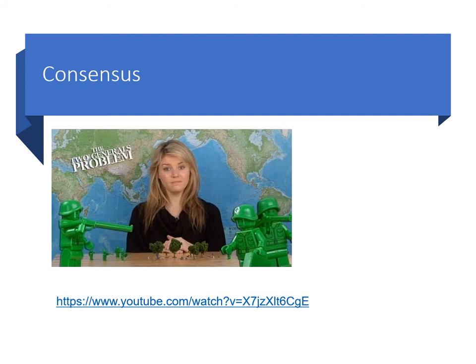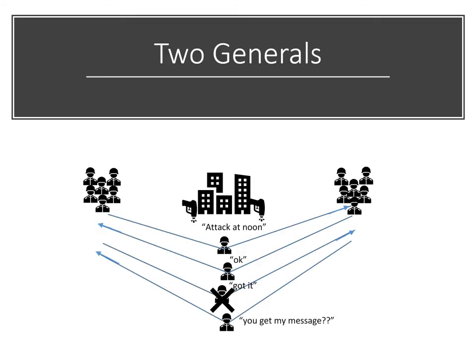Crash faults have other implications for building distributed systems, particularly around distributed consensus. The general problem is nicely illustrated by the two generals problem. Imagine a city under siege by two armies lying on opposite sides of the city; the terrain surrounding the city is difficult to travel through and visible to snipers from the city.